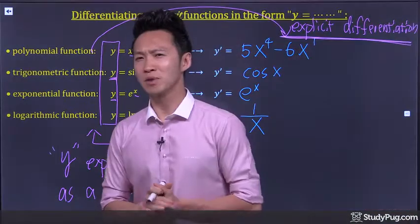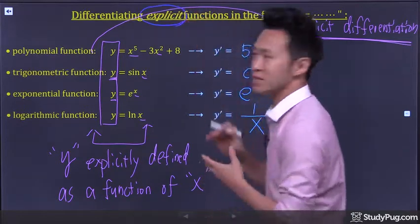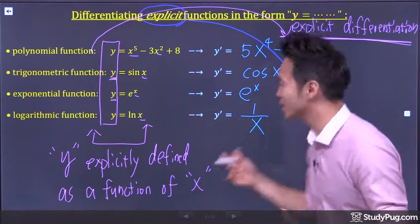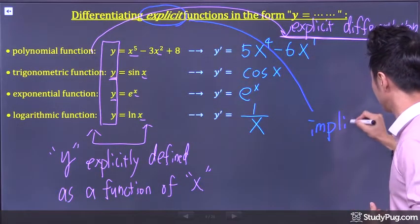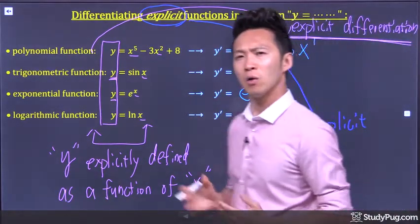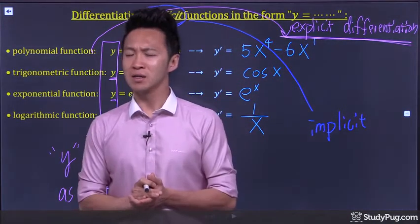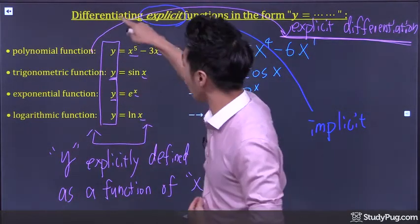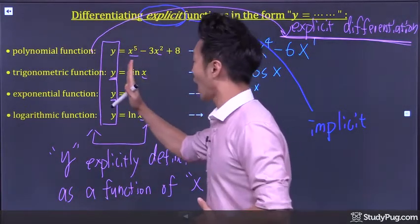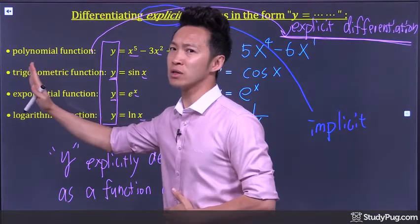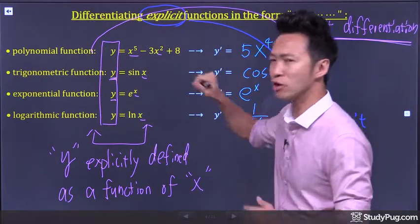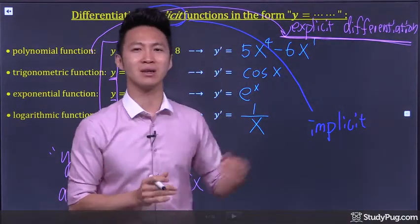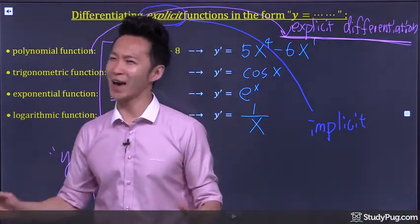What's the opposite of explicit? That would be implicit, which means implied — something that's not directly expressed. Unlike these functions which all have y isolated to one side of the equation so that y can be explicitly defined as a function of x, some functions are defined implicitly by a relation between x and y.